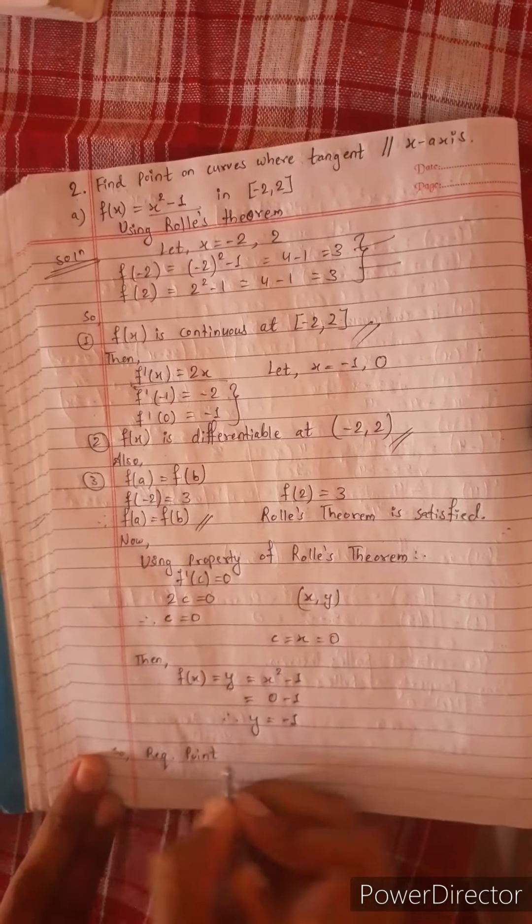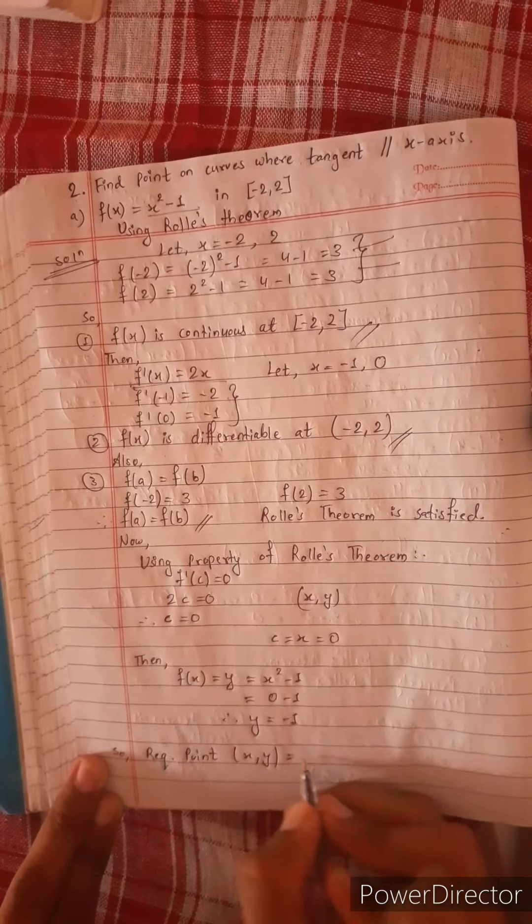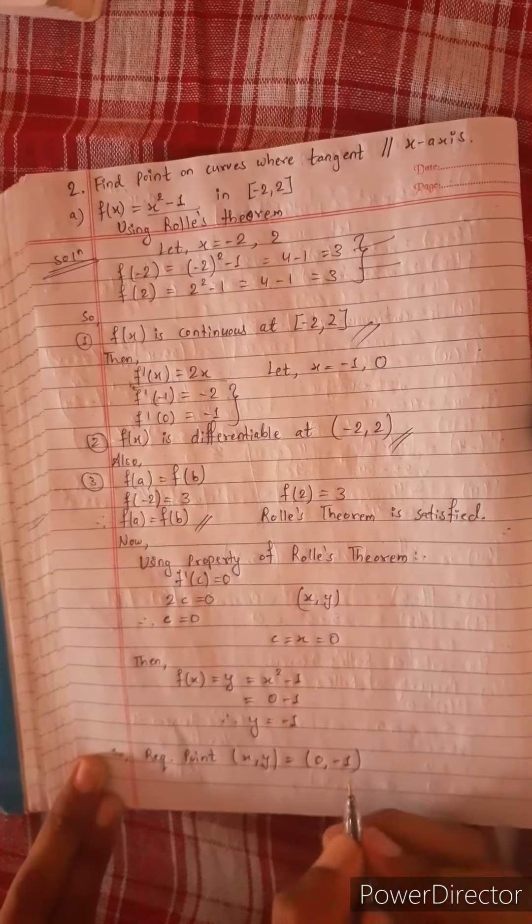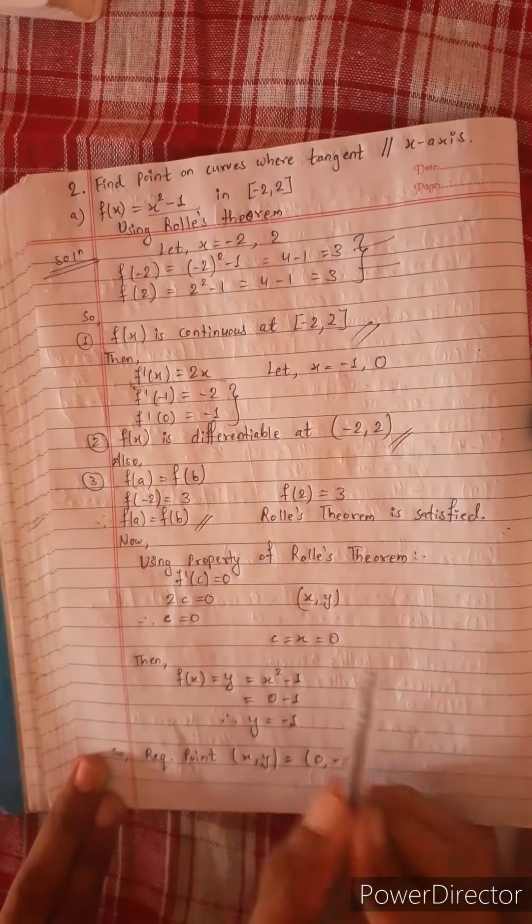The required point x, y equals to 0, minus 1. And x is equal to 0.